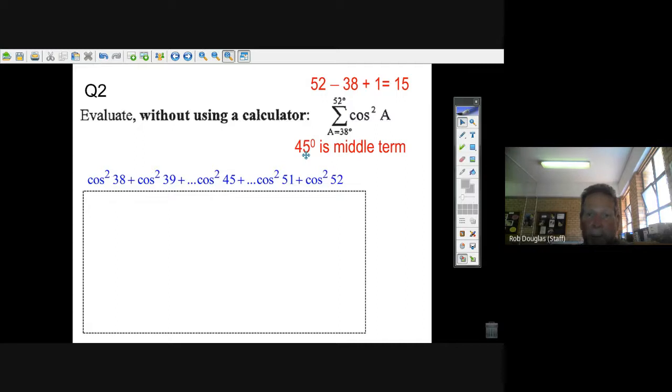And then put in 39 and 40 and 50. The middle term has to be 45 degrees. That's 38 plus 52 divided by 2. 45 degrees will be right in the middle, that's worth thinking about.